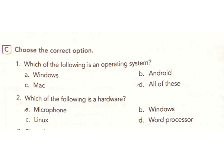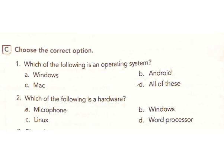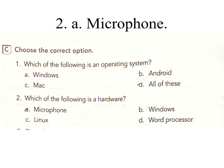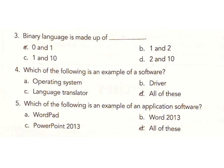C. Choose the correct option. 1. Which of the following is an operating system? A. Windows, B. Android, C. Mac, D. All of these. Answer: D, all of these. 2. Which of the following is hardware? A. Microphone, B. Windows, C. Linux, D. Word processor. Answer: A, microphone. 3. Binary language is made up of A. 0 and 1, B. 1 and 2, C. 1 and 10, D. 2 and 10. Answer: A, 0 and 1.